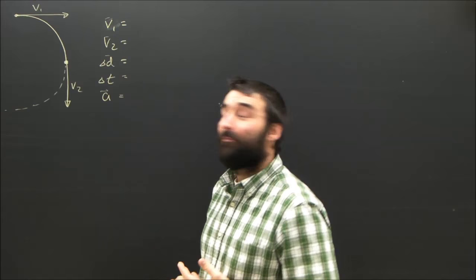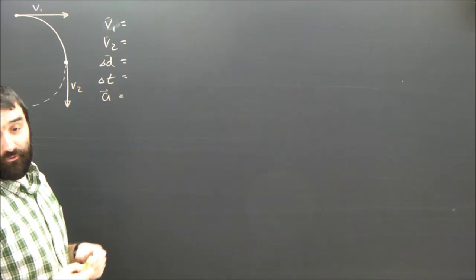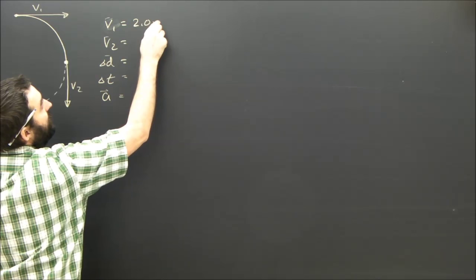Okay, so you've read the question, and this is essentially a Big 5 problem. We've got the kid on the Ferris wheel, and the question said that it's going at a constant speed of 2 meters per second. So V1 will be 2 meters per second, but so will V2.